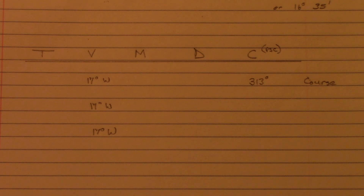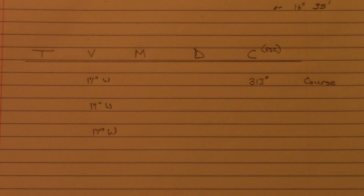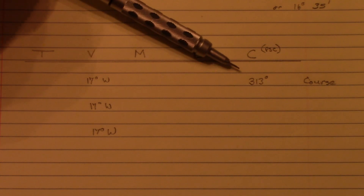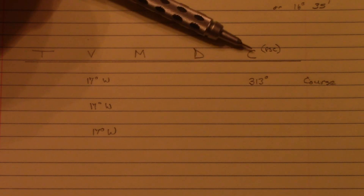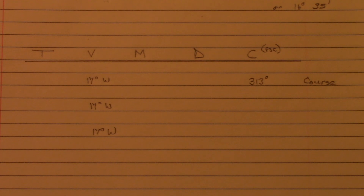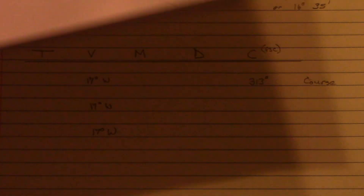Now that I have my variation, I can build out my table and determine the conversions from ship's compass to magnetic or true. Recalling the word problem, we have a course of 313 degrees per ship's compass. We'll refer to our deviation table and look up the deviation for this course of 313 degrees.